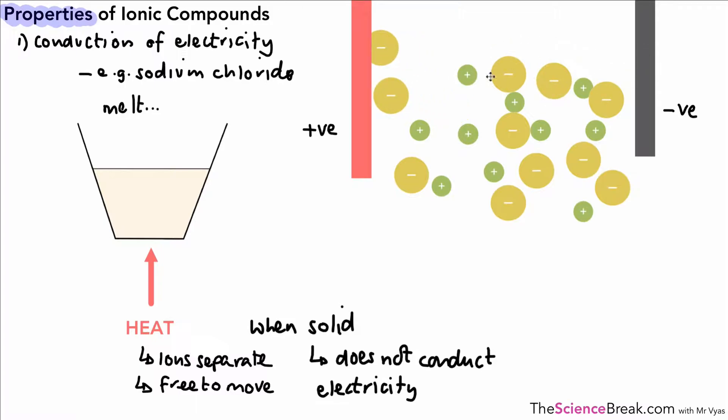You'd see that the ions would move, the negative to the positive side and the positive to the negative side, and what that does is allows a charge to flow between the two materials that can conduct electricity between the red and the gray there, and that means a charge can flow.